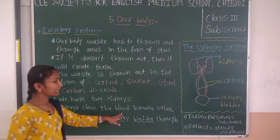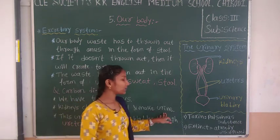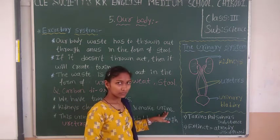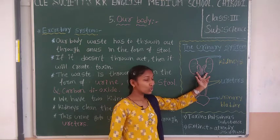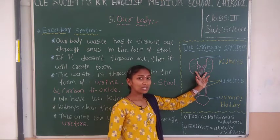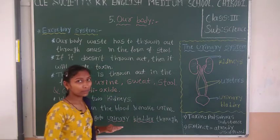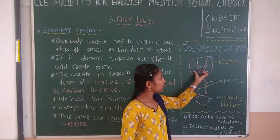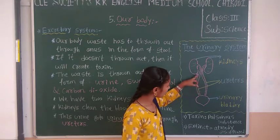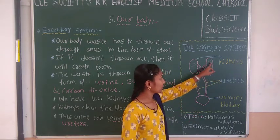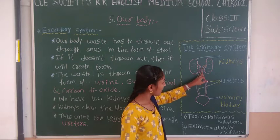Once urine is formed, it passes through the ureters — tube-like structures — from the kidneys down to the bladder. That urine passes through the ureters and comes down to the urinary bladder.